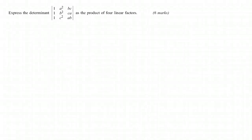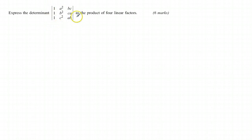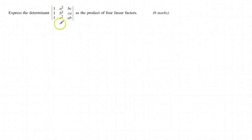In this video we're going to be looking at factorising determinants. We want to express this determinant here as the product of four linear factors. The determinant is a scalar quantity, and the reason why we can express it as a product of four linear factors is because we can take all these variables and write it as a single expression made up as the product of four linear expressions. So that's what we're going to aim to do.